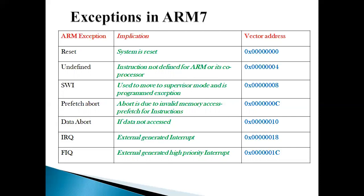Software interrupt is normally used to jump to certain OS routines — operating system routines, system routines. It actually moves to the supervisor mode and is said to be a programmed instruction because a software interrupt is an instruction we normally write in a program. It is followed by SWI and a number. Based on that number, a subroutine address is called from the operating system which changes the mode of the processor from user mode to supervisor mode, and the particular OS subroutine is executed.